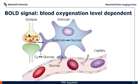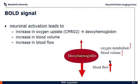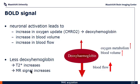The BOLD signal basically comes from the fact that we have neuronal activation going on when we use our brain, which leads to an oxygen uptake and we get more hemoglobin. There are actually three things going on during neuronal activation: the CMRO2 increase (the oxygen uptake), a blood flow increase, and a blood volume increase. It turns out that the dominant effect is the blood flow increase, so the net effect will actually be a reduction in deoxyhemoglobin, contrary to what you might expect from the fact that we actually consume oxygen.